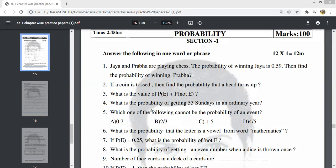Next question: which one of the following cannot be the probability of an event? The probability of an event lies between 0 less than or equal to P of E less than or equal to 1.